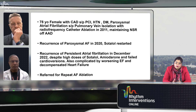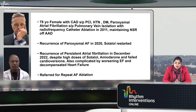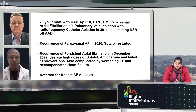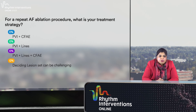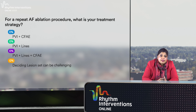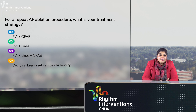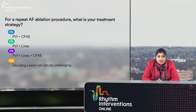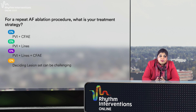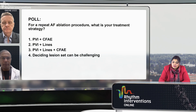Before going on to the case clip, I want to ask the audience a poll question. For a repeat AF ablation procedure, what is your treatment strategy currently? Are you doing PVI plus CAFEs, PVI plus lines, a combination of lines and CAFEs along with PVI, or is designing the lesion set more of a challenge requiring a customized approach? Please vote on this poll.